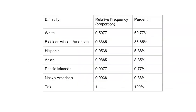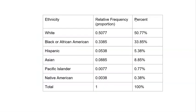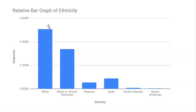Next we have a relative frequency bar chart. This is nothing more than taking the counts divided by the total — which was 260 — giving us our proportions or percentages. Instead of the counts, we turn the proportions into bars. On the x-axis we have the same categories, and on the y-axis instead of counts we now have the proportion, ranging from 0.0 to 0.6. Our highest proportion was white at about 50.77%, so there's no need to go all the way to 1.0.